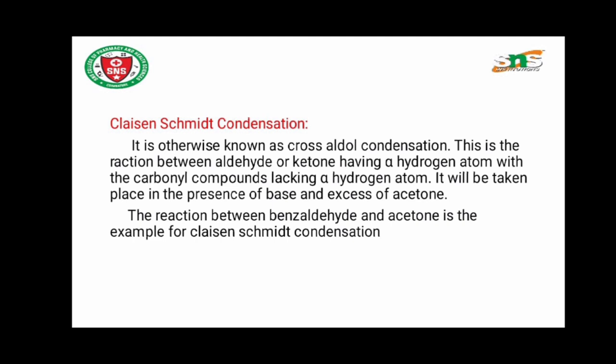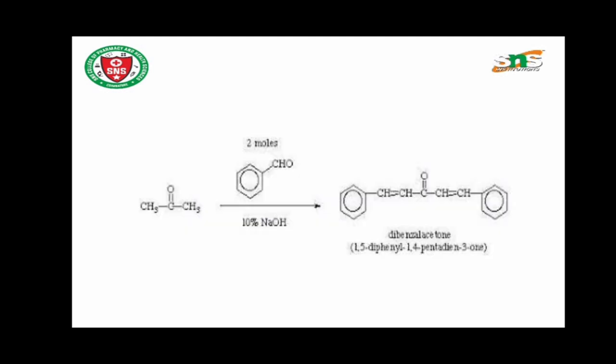The reaction between benzaldehyde and acetone is the common example for Claisen-Schmidt condensation. Two molecules of benzaldehyde will react with acetone in the presence of 10% sodium hydroxide. Here, the two alpha hydrogens present in acetone will each take one oxygen from a molecule of benzaldehyde, so two molecules of water will be eliminated.